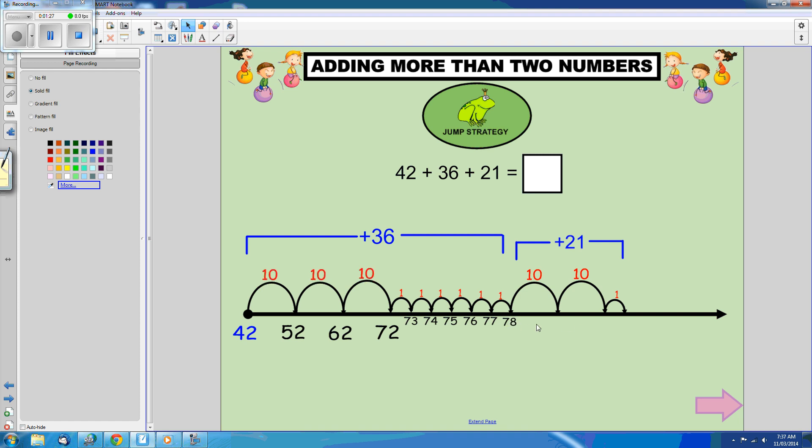So 78 plus 10 is 88, plus another 10 is 98, plus 1 is 99. So our answer to 42 plus 36 plus 21 is 99.